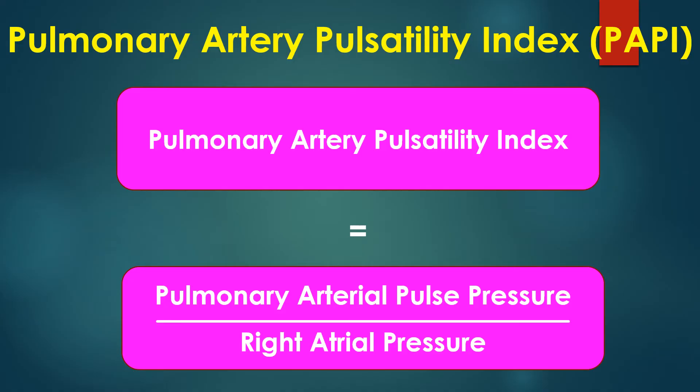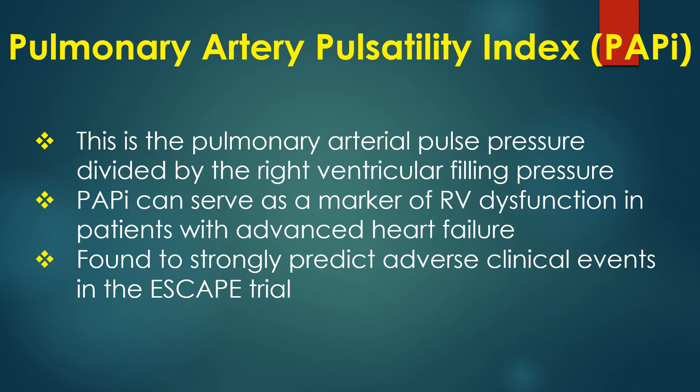Pulmonary artery pulsatility index equals pulmonary arterial pulse pressure — i.e., the difference between systolic and diastolic pressures — divided by the right atrial pressure or central venous pressure. This is the pulmonary arterial pulse pressure divided by the right atrial pressure, which is in fact the right ventricular filling pressure.